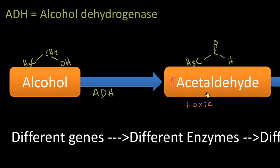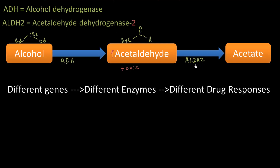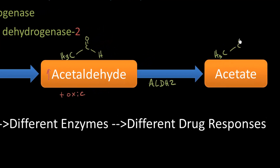The second enzyme is acetaldehyde dehydrogenase, written as ALDH2 — acetaldehyde dehydrogenase 2. This is also a dehydrogenase: it takes acetaldehyde, oxidizes it, and forms acetic acid. Acetic acid is what makes vinegar sour, and we can use this acetate as an energy source. Anything causing a buildup of acetaldehyde will cause the toxic effects. ALDH2 is a mitochondrial enzyme whose predominant job is to metabolize acetaldehyde.